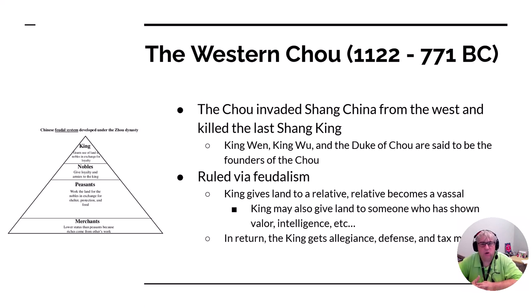The most important thing to know about the western Zhou is the development of feudalism. Chinese feudalism is really similar to European feudalism: you have the king at the top, the king gives land to people called vassals, and the king is the lord of the land. Those vassals are typically nobles, and they can give their land away to others as well, creating a whole system that starts at the top and works its way down.